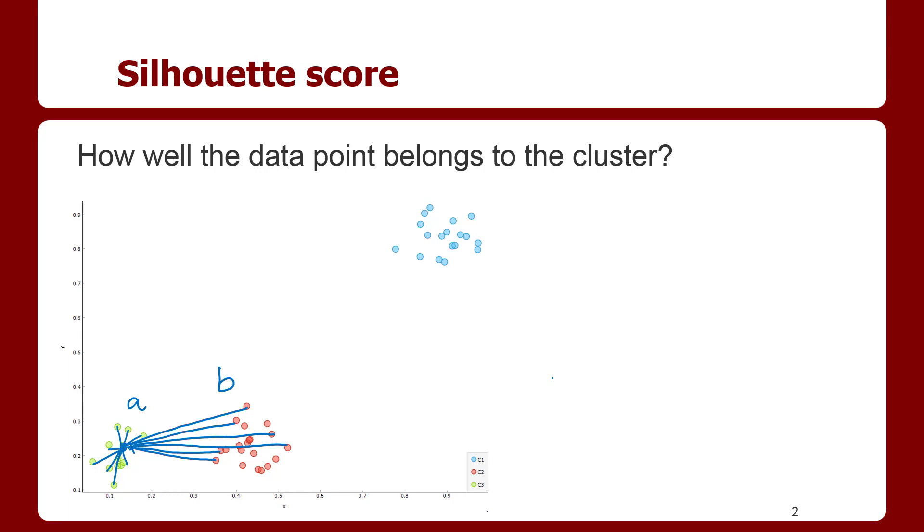If the point P well belongs to the green cluster, then B is supposed to be large and A is supposed to be small. So the distance between them, B minus A, is as large as possible.